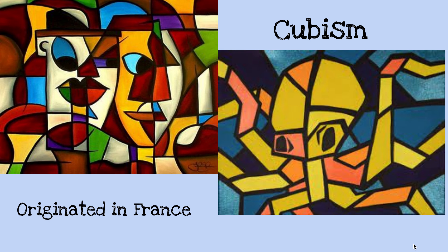The next form of art that we want to talk about is cubism. Cubism originated in France in about 1907, so about 100 years ago, by Pablo Picasso. You may have heard of Pablo Picasso before. His style was cubism — he would reinvent traditional subjects and make them look a little different.